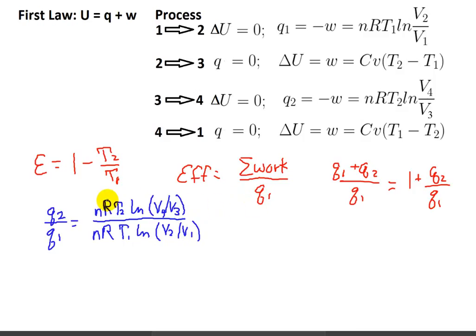Now you can see that the nRs are going to cancel. That's not a problem. And we have T2 over T1. We needed T2 over T1 if we're headed for that efficiency. But it's positive and we need it to be negative. And what's more, we have these rather ugly looking log terms, which we need to figure out how to get rid of.